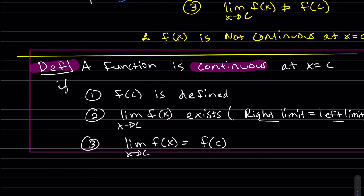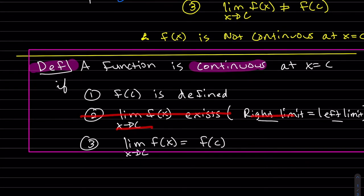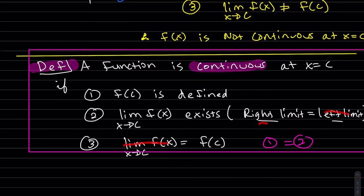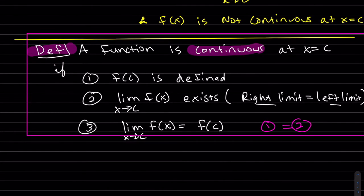Here's the definition for continuity at a point. First, f of c needs to be defined — but that's not enough. Second, the limit exists, which means the right limit equals the left limit — but that's still not enough. And lastly, these two have to be equal. So the left limit equals the right limit, which is the limit, which equals where it's defined. All three have to be lined up to be continuous at a point at x equals c.